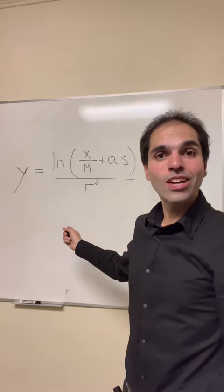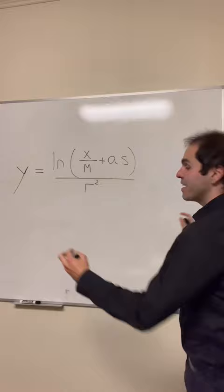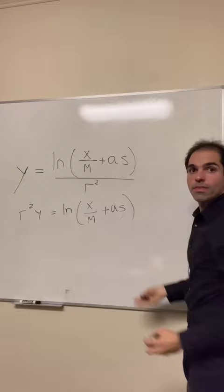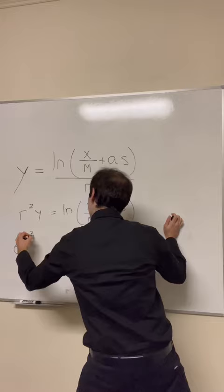This is the coolest equation ever known to humankind, and here's why. Because cross-multiplying, we get r squared y equals ln of x over m plus as, and then exponentiating, we have e to the r squared y equals x over m plus as.